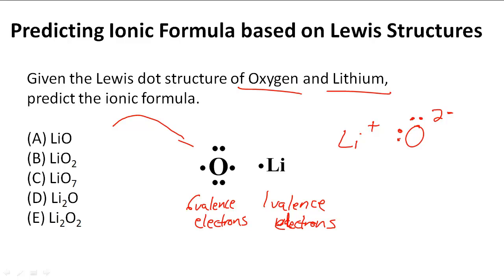If I'm drawing the Lewis dot structure for their ions, this is what I would get. However, if we only have one Li, we can only donate one valence electron.